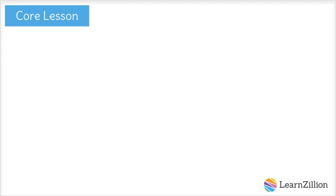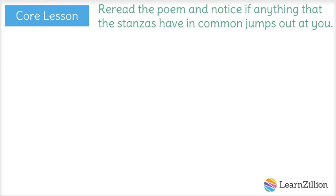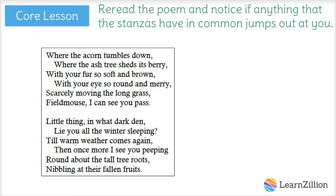So our first step is to re-read the poem and look for something the stanzas have in common. I'll start with just the first two stanzas and see if anything jumps out at me. Remember, this isn't the first time I've read the poem, so instead of reading carefully for each word's meaning, I'm going to read a little quicker and skim through the text. You know what I noticed? In stanza two, lines seven and eight say, "Little thing, in what dark den lie you all the winter sleeping?"